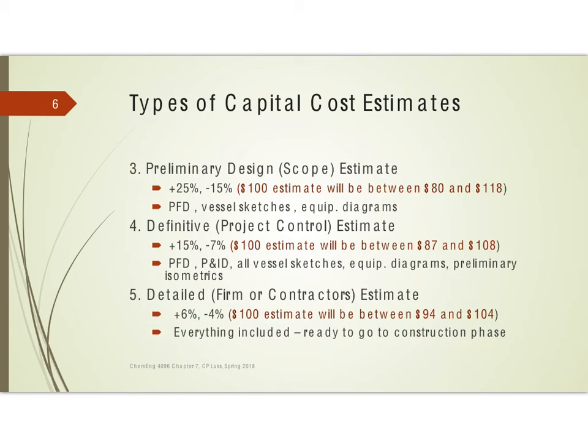As we continue doing work, we put more effort in, have more information, and therefore the quality of our estimate improves. But it's never going to be perfect. For the scope estimate, at this point we have the process flow diagram, vessel sketches, and equipment diagrams.